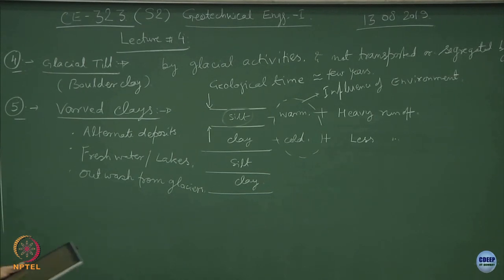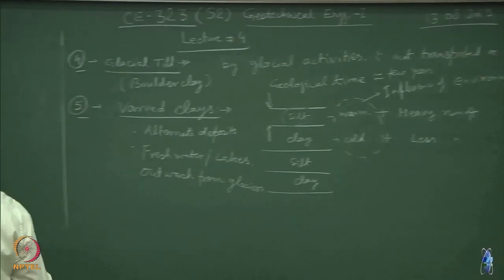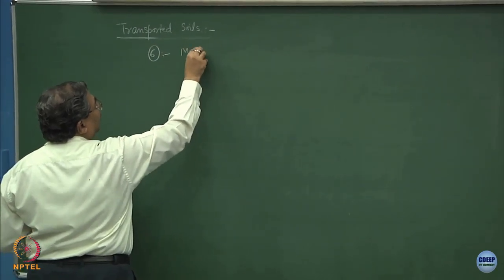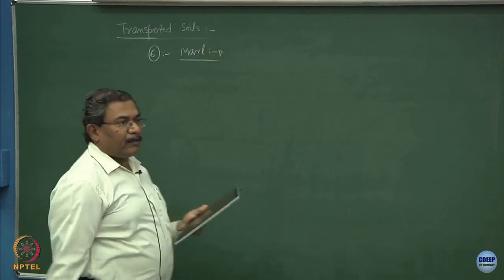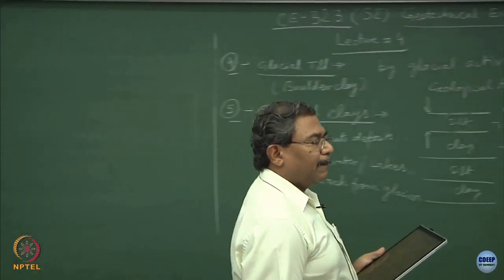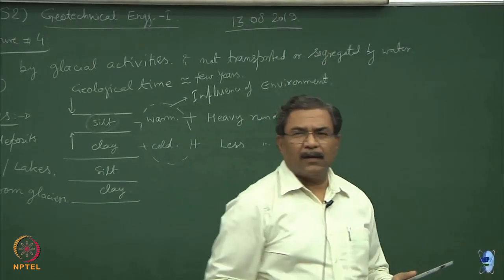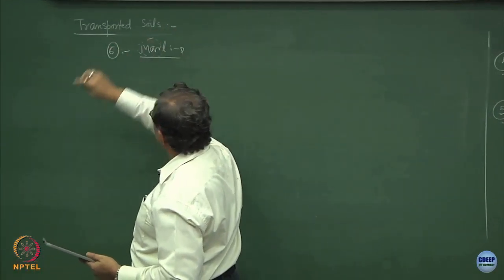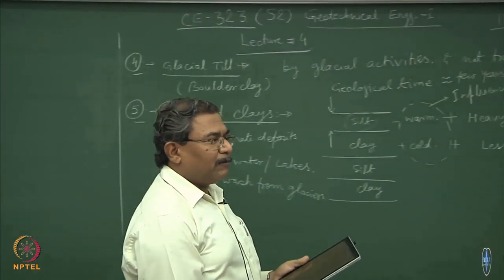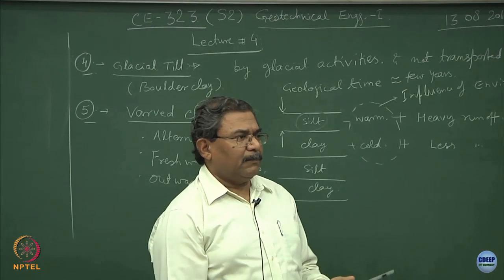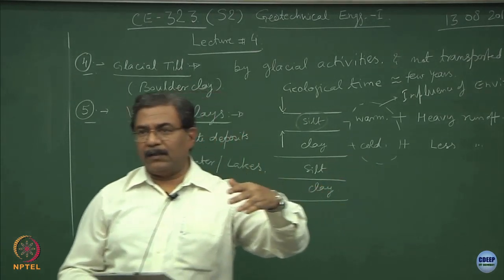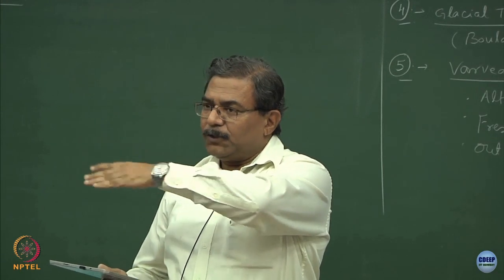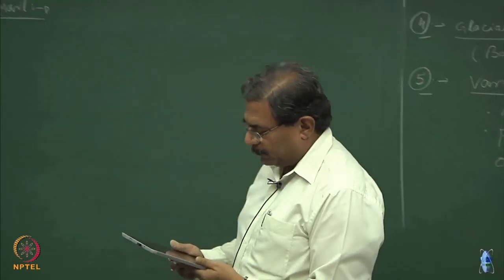There is another category of transported soils from marine environments, known as Marl. Check the dictionary meaning of the word Marl. Marl basically corresponds to the marine environment — wherever you have a coast or seashore. The land side is known as onshore and toward the sea is offshore. Marly soils are very fine-grained materials and their origin is the marine environment.